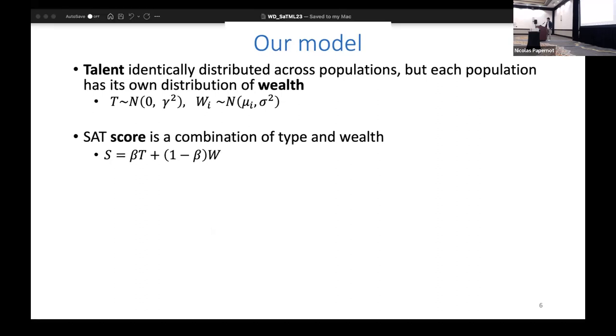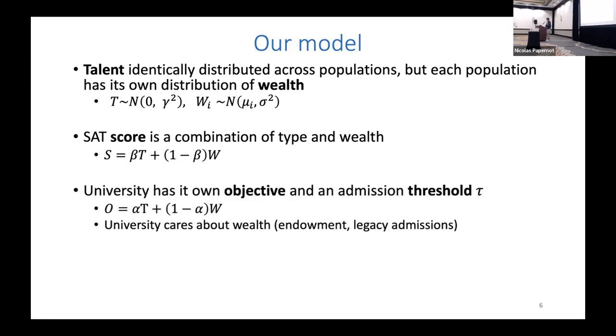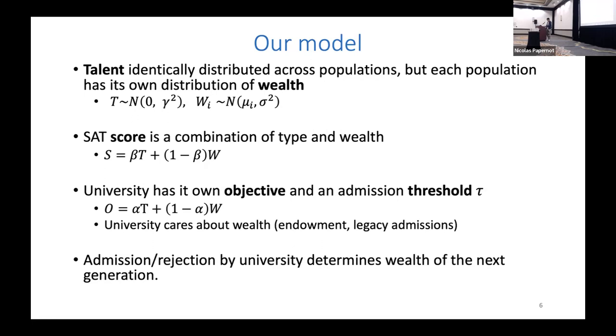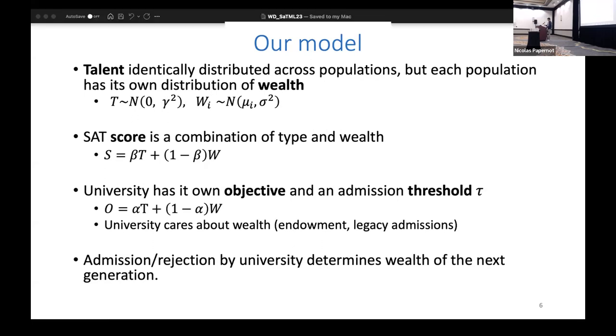The university has its own objective and an admission threshold τ. This objective is a different convex combination quantified by α. It gets the SAT score, evaluates the objective, and decides to admit the candidate based on whether it's greater than the admission threshold τ. Then the admission or rejection determines the next round's wealth, the next generation's wealth.